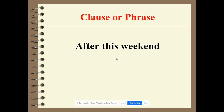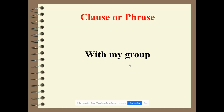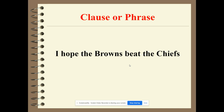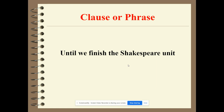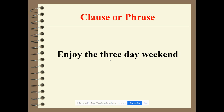'After this weekend' — no verb, it's a noun but the object of a preposition, so it's a prepositional phrase. 'In the refrigerator' — same thing. 'I hope the Browns beat the Chiefs' — subject 'I,' verb 'hope,' that's a predicate, making it an independent clause — a complete thought. 'Until we finish the Shakespeare unit' — subject 'we,' verb 'finish,' so it's a dependent clause. 'Enjoy the three-day weekend' — the understood subject is 'you,' predicate is 'enjoy,' making it an independent clause.